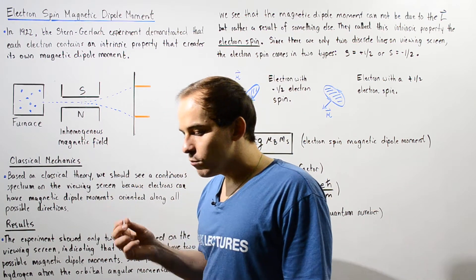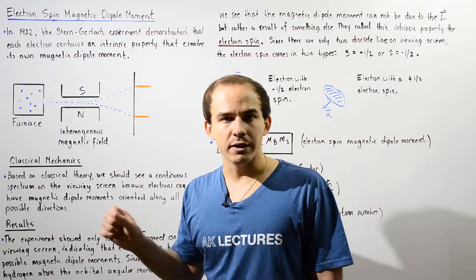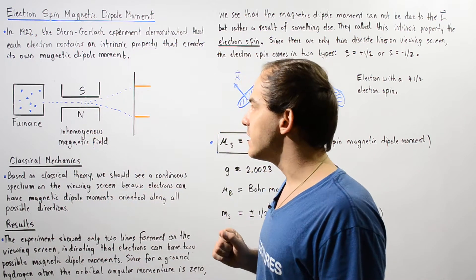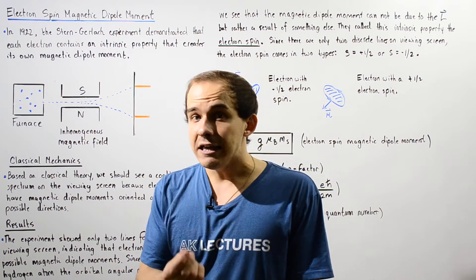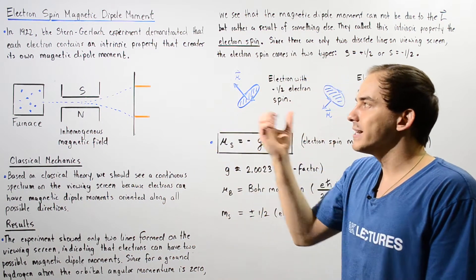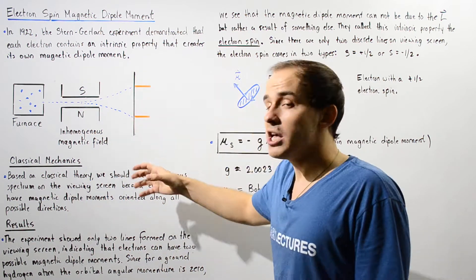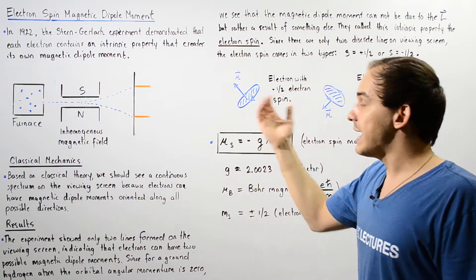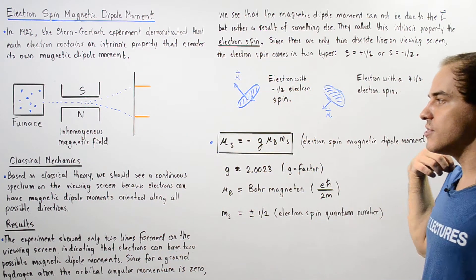Any time we take an object that has a magnetic dipole moment and place it inside a non-uniform magnetic field, that object will experience a force that changes its pathway. So if the atoms traveling through the non-uniform magnetic field have a magnetic dipole moment, they will be deflected as shown in the diagram toward the viewing screen. Any time an atom hits the viewing screen, we can see it because it creates a glow on that screen.